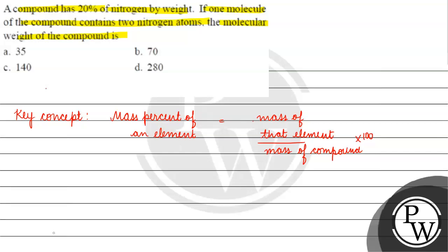The mass percent is 20. The mass of that element - two nitrogen atoms - is 2 times 14 gram per mole. Mass of the compound, we'll call it x, times 100.